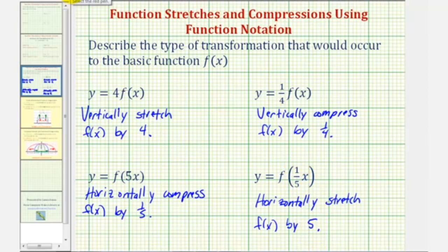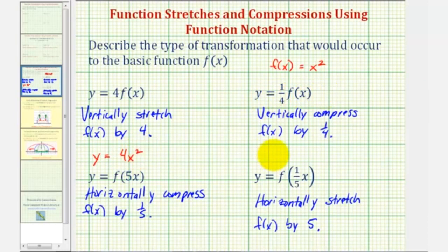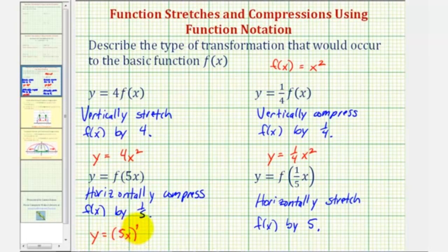For example, if we consider the basic function f of x equals x squared: four times f of x would be y equals four x squared; y equals one fourth times f of x would be y equals one fourth x squared; for f of five x, the input is now five x, so we would have y equals five x squared, or twenty-five x squared; and for y equals f of one fifth x, we would have y equals one fifth x squared, which is the same as one twenty-fifth x squared.